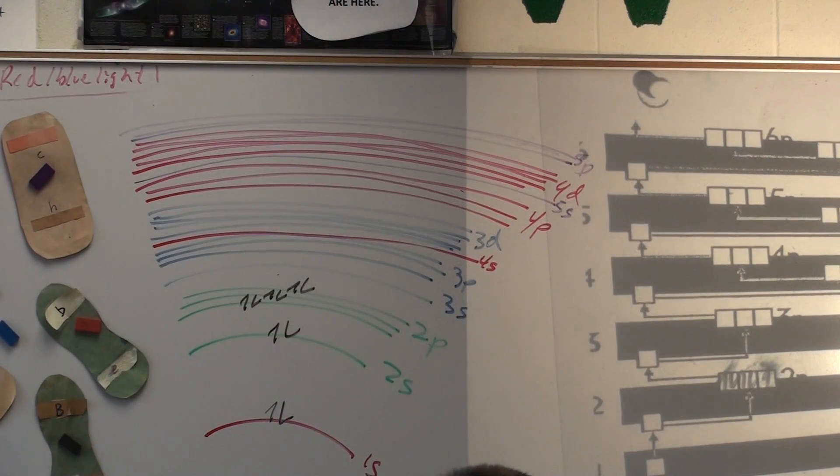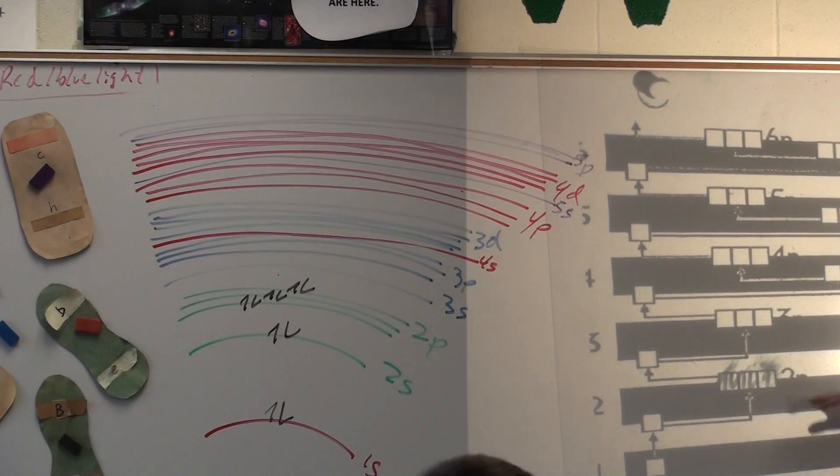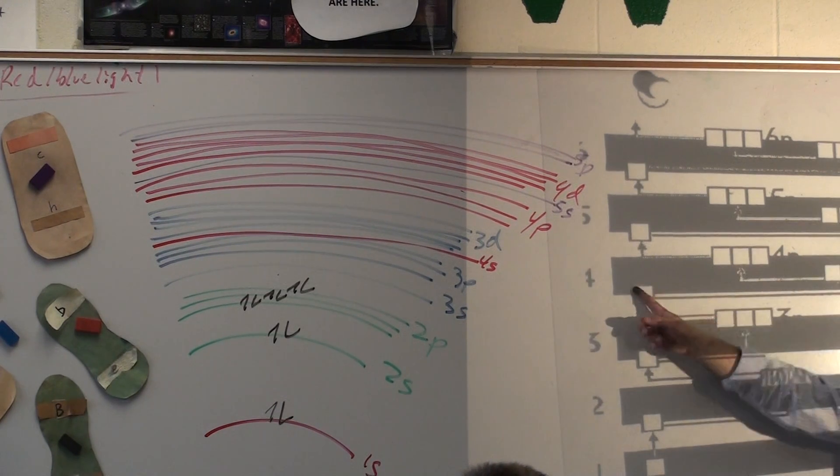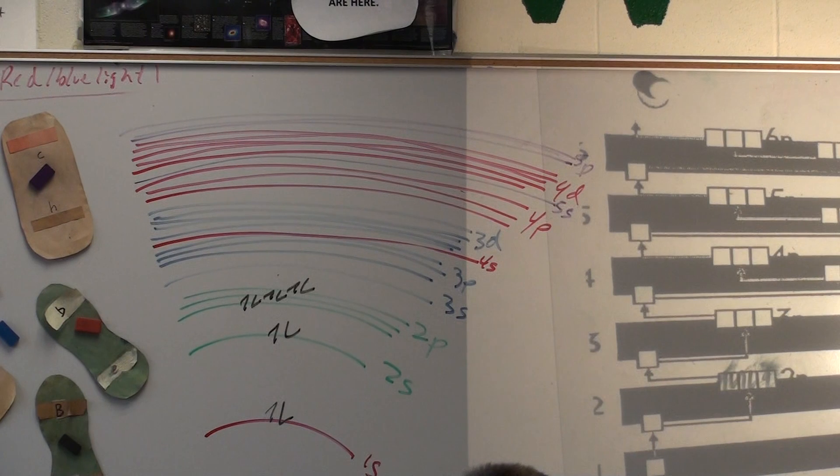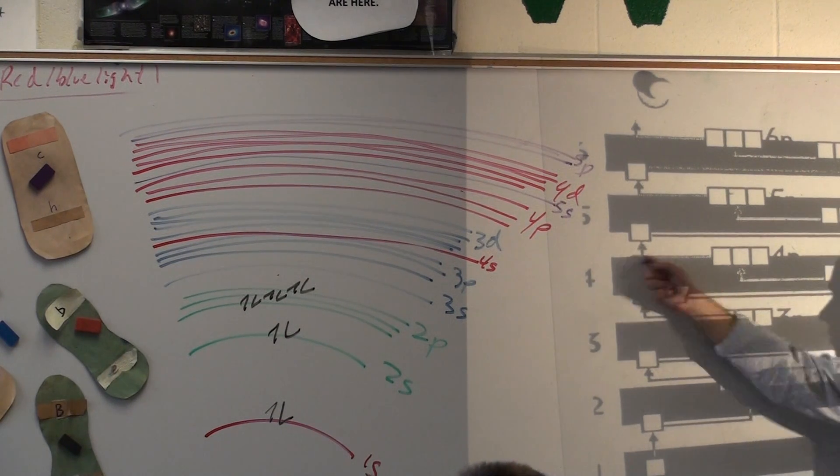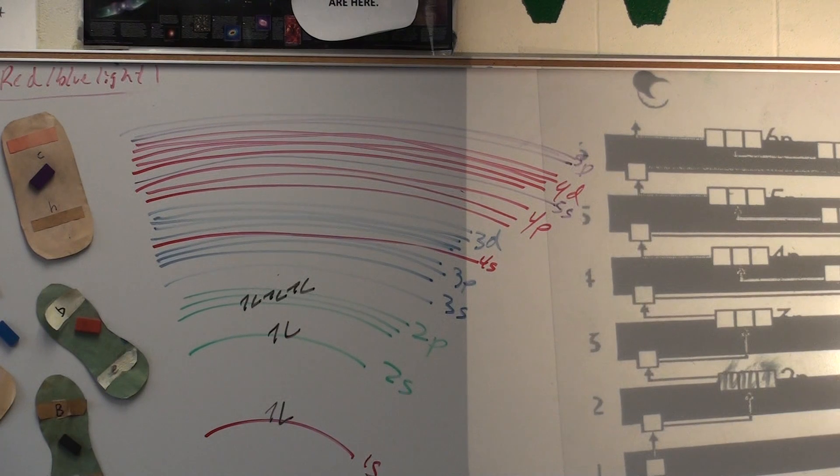So in the beginning, you're going to be relying on this chart a lot. And also, this is the reason why this 3d block is not down here. It's up here. The 4s is lower in energy than the 3d. Since it's lower in energy, we fill the 4s before we fill the 3d.